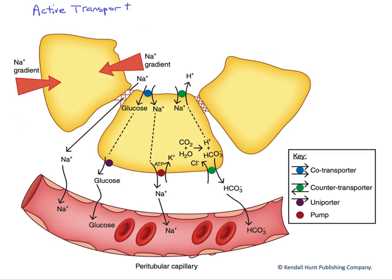In this figure, let's examine active transport, both primary and secondary. At the top we have our nephron wall and at the bottom we have a surrounding peritubular capillary. Active transport is one of the mechanisms that these nephron cells utilize for both reabsorption and secretion.